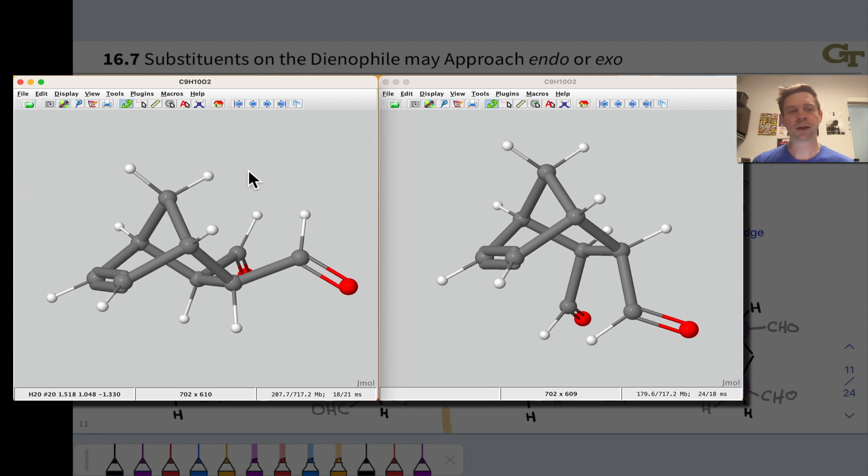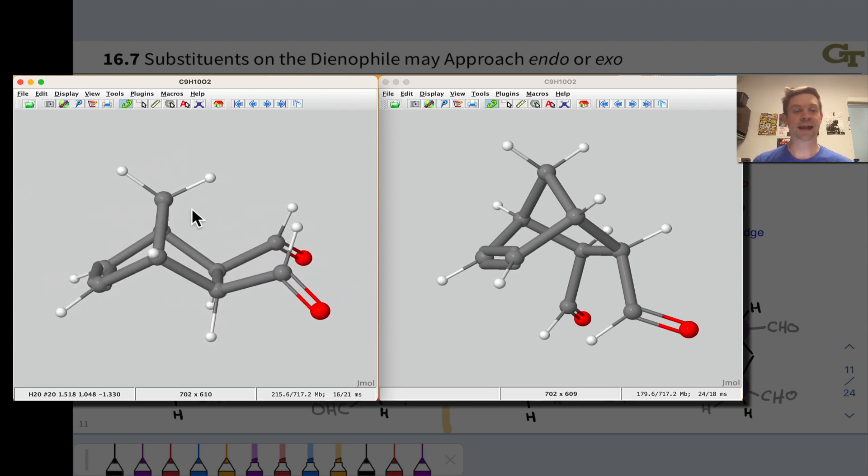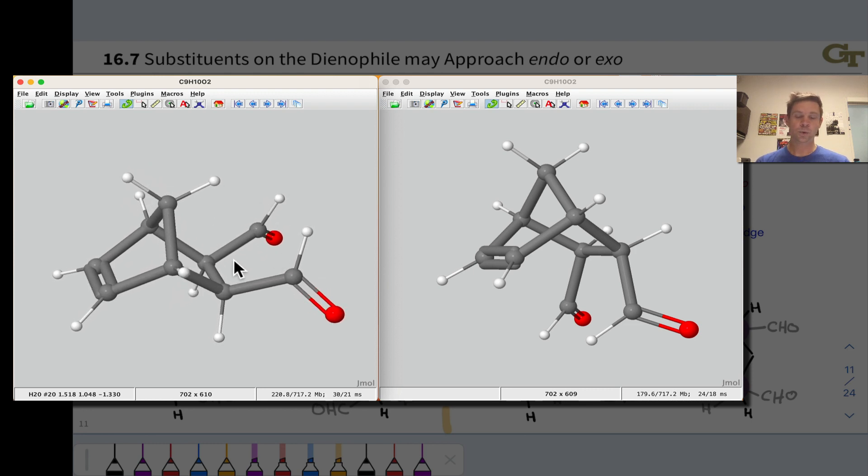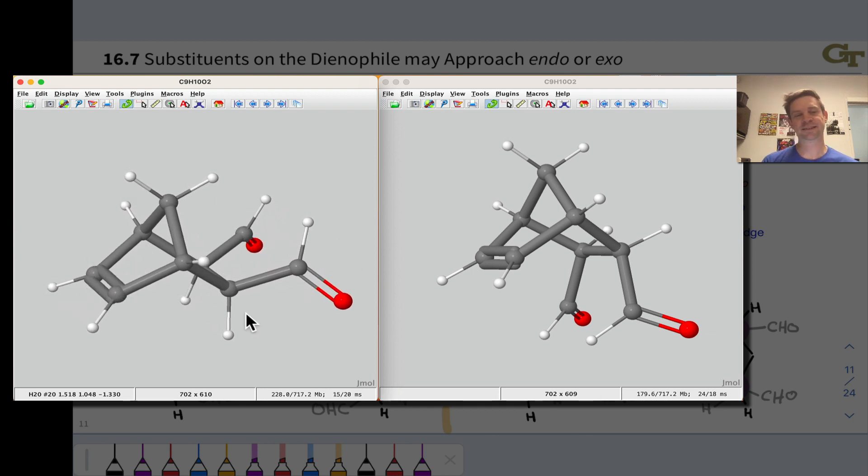Just in case it's helpful, I wanted to highlight three-dimensional structures of the endo and exo products. So here on the left, we have the exo product with the two aldehyde groups, notice anti to the carbon-carbon double bond, on opposite sides, if you like, from the two newly formed sigma bonds.